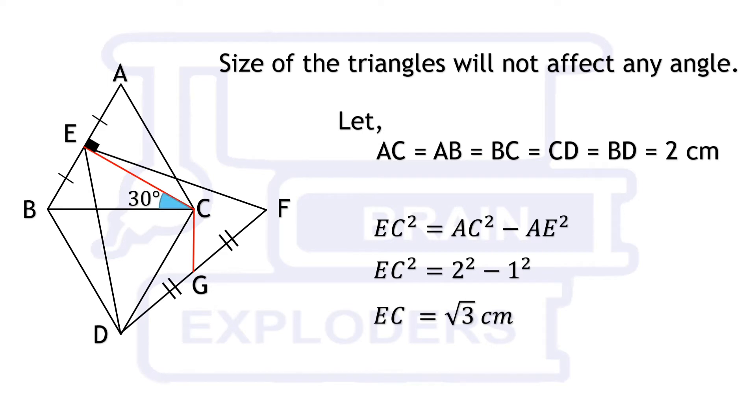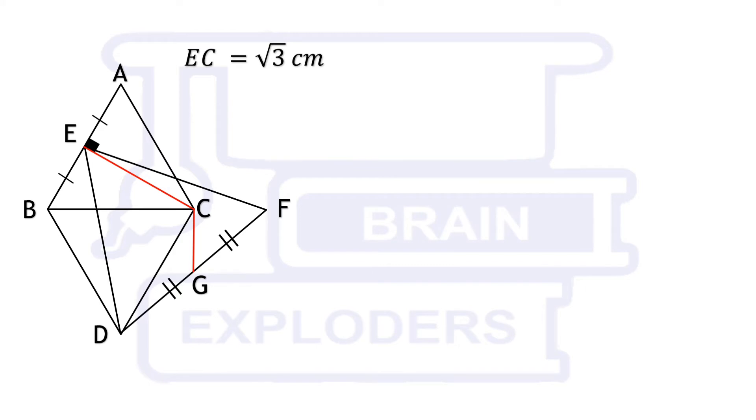Angle ECB is half of 60 that is 30 degrees and angle BCD is 60 degrees. Therefore angle ECD becomes a right angle. On applying Pythagoras, we get ED equals to root 7 cm.